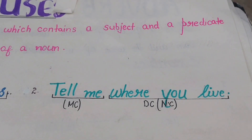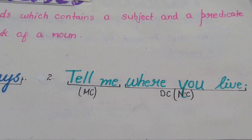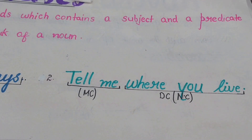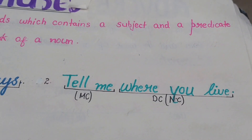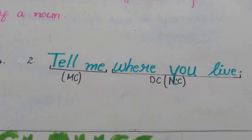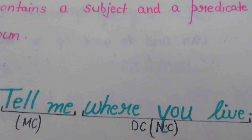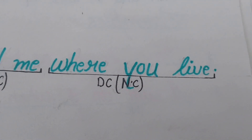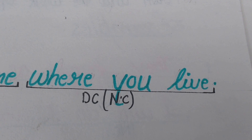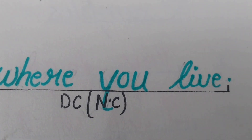Let us talk about another example of a noun clause: 'Tell me where you live.' In this, 'tell me' is the main clause and 'where you live' is the dependent clause, depending on the main clause, 'tell me.'